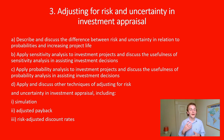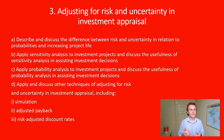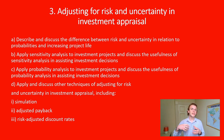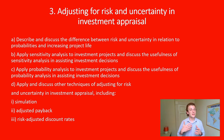For point three — adjusting for risk and uncertainty in investment appraisal — this comes down to the risk appetite of management. Part A asks you to describe and discuss the difference between risk and uncertainty in relation to probabilities and increasing project life. Consider: what is the likelihood the project goes ahead, what are the probabilities, does it have a large outlay or scrap value, and are there hypothetical percentages increasing each year?